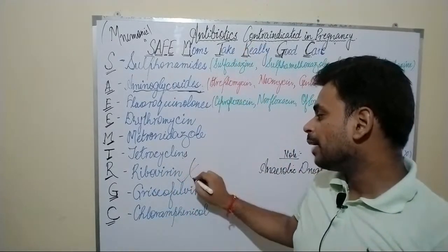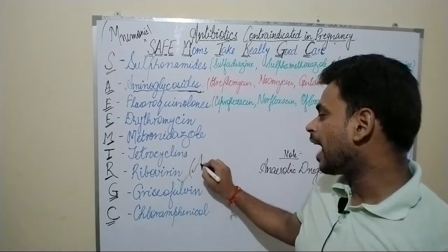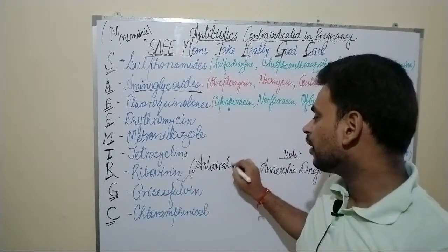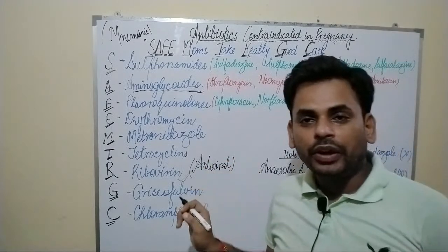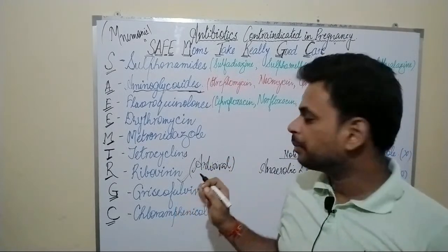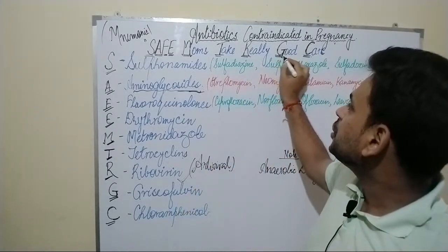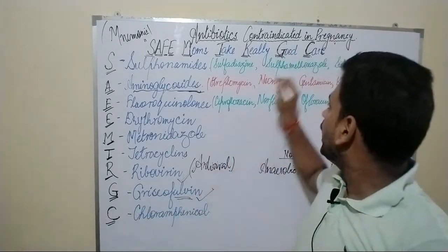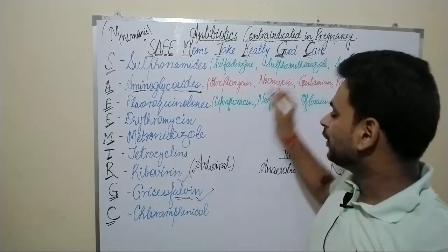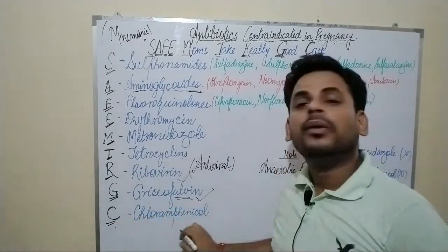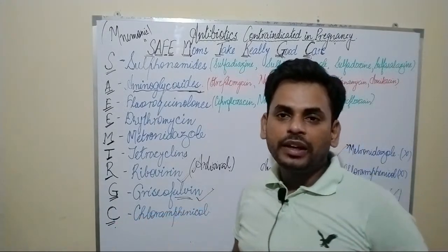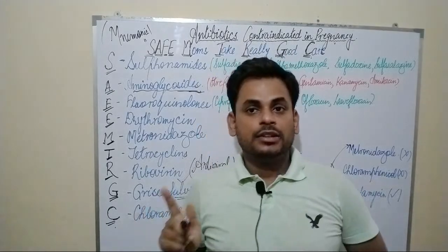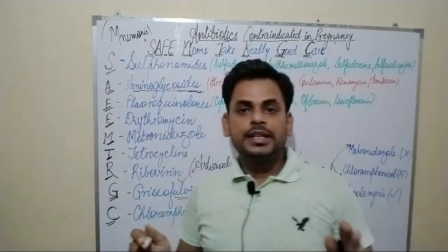The R of 'really' refers to ribavirin, which is an antiviral drug. This antiviral drug ribavirin is also contraindicated in pregnancy. Moving on to the G of 'good' — it refers to griseofulvin. And the C of 'care' refers to chloramphenicol, which is a broad-spectrum antibiotic that is mostly contraindicated during pregnancy.